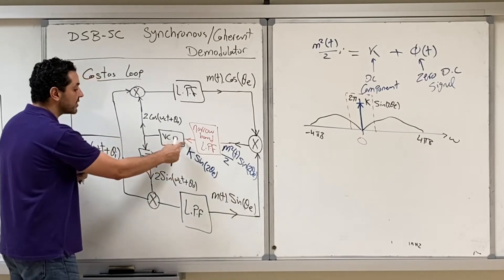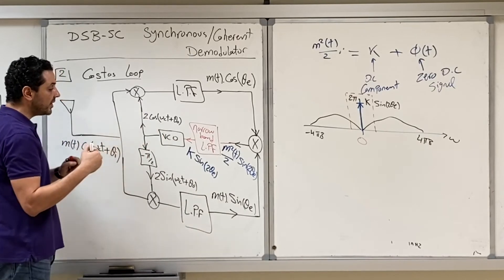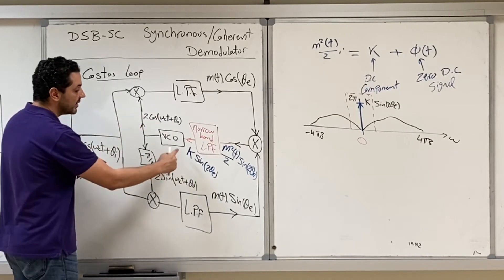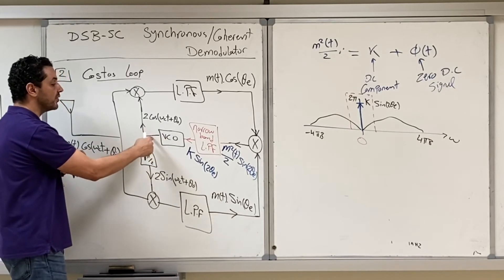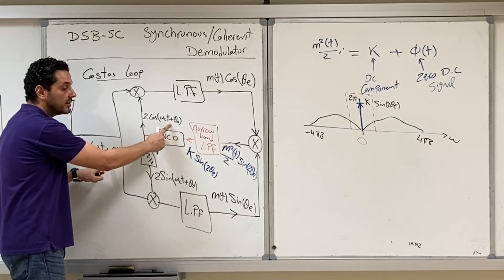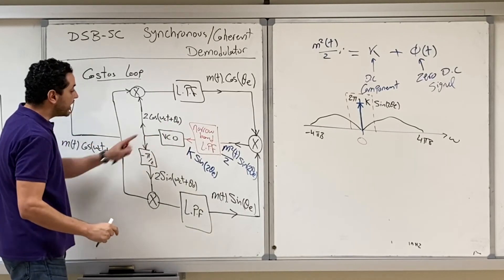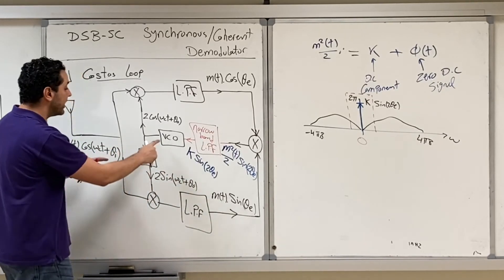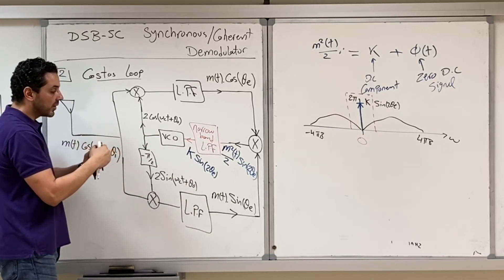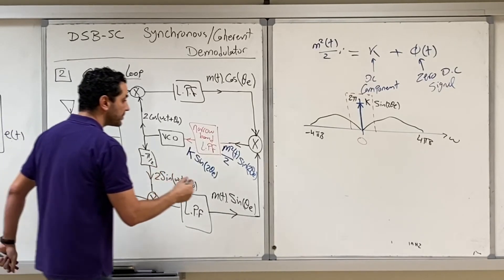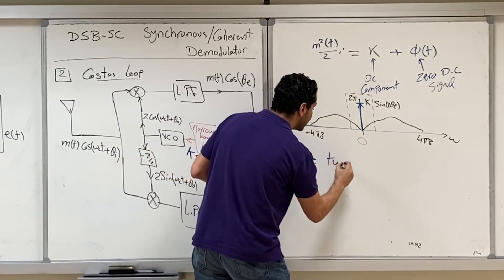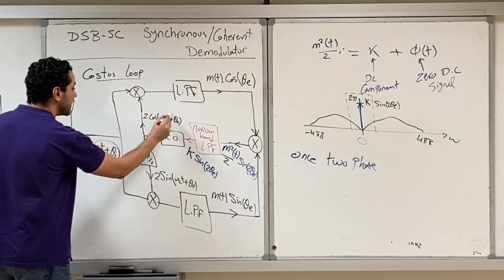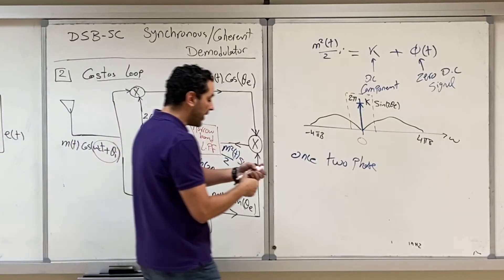This error signal modifies the VCO: if θi > θ₀, the error signal is positive and speeds up the VCO until the two phases lock. If θi < θ₀, the error signal is negative and slows down the VCO until the two phases lock together. Once the phase of the received signal and the VCO-generated phase lock together, the loop maintains that lock.